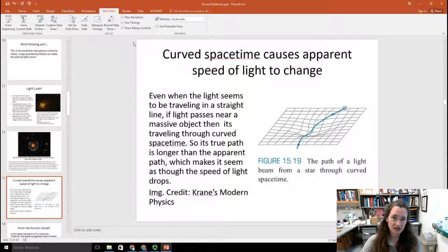So now, another interesting effect, and a confirmation of general relativity, is that the curved spacetime can actually cause the apparent speed of light to change. So even when it's nearby effects, like looking at things on the other side of our sun, even when the light seems to be traveling in a straight line to us, when the curvature and the bending of light isn't that great, if the light passes near a massive object, then it's traveling through curved spacetime. So the true path is longer than the apparent path, which makes it seem as though the speed of light is dropping in that region. And so you might measure a speed that's a little lower than the speed of light, even if it's in a vacuum. So this is illustrated here. Let's just say that light is being emitted from some object on the other side of the sun, and it doesn't look to us as though the light is being curved or bent very much. However, we can measure that the amount of time that it takes for the light to get to us is a little longer than it should be, given the speed of light is 3 times 10 to the 8th meters per second. So this can be confirmed and measured.